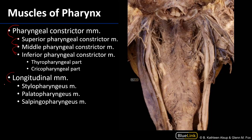Now looking at this view, this is a posterior view of the posterior pharyngeal wall. We can see here the foramen magnum of the skull and the occipital condyles. We've got one set of carotid sheath contents there, the other set there, and we can see the pharyngeal constrictor muscles quite clearly. I'm going to outline them now.